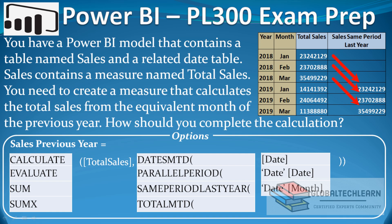The question is: you have a Power BI model that contains a table named Sales and a related Date table. Sales contains a measure named Total Sales. You need to create a measure that calculates the total sales from the equivalent month of the previous year. How should you complete the calculation?